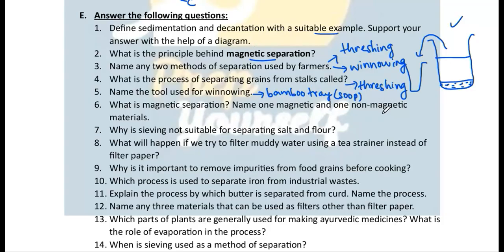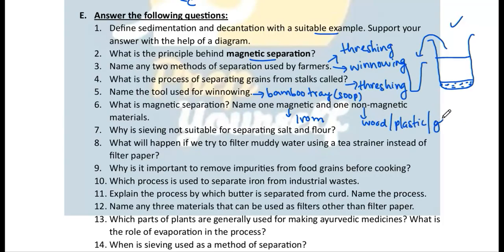Question 7: Name one magnetic and one non-magnetic substance. Iron is one magnetic substance. Wood, plastic, or glass are non-magnetic substances.